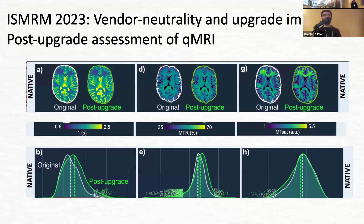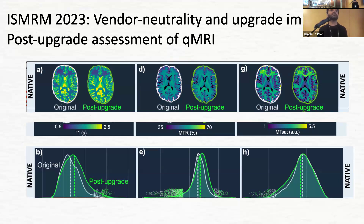We tried this with our own scanner: we upgraded it, and observed the same thing — the variability between original and post-upgrade was on the order of about 30%. This is solvable, but it requires collaboration of researchers and collaboration of vendors.